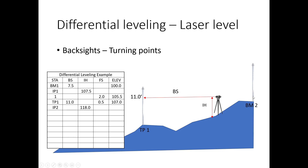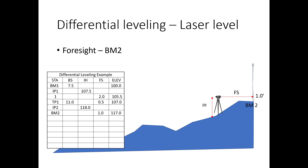Now that we've established the new instrument height, we can turn around and shoot towards Benchmark 2, which we should be able to reach from this position. We take a foresight, read the rod at 1 foot, and subtract that foresight from our instrument height of 118 feet. That gives us the elevation of our second benchmark: 117 feet.